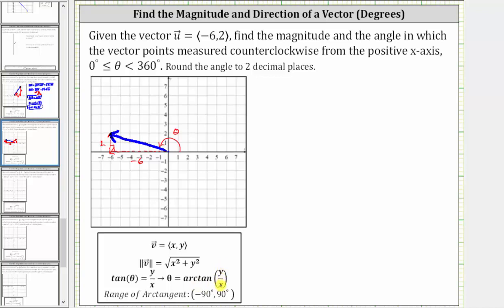We just need to be careful though, because we want the angle to be in this interval here from zero to 360 degrees, and the output or range of arc tangent is the interval from negative 90 degrees to positive 90 degrees. So we do need to make sure we give theta as the correct measure.